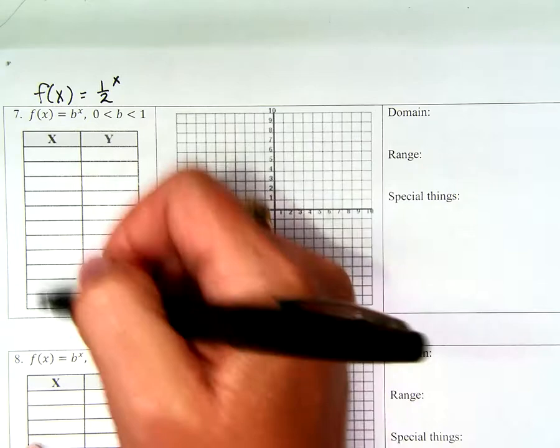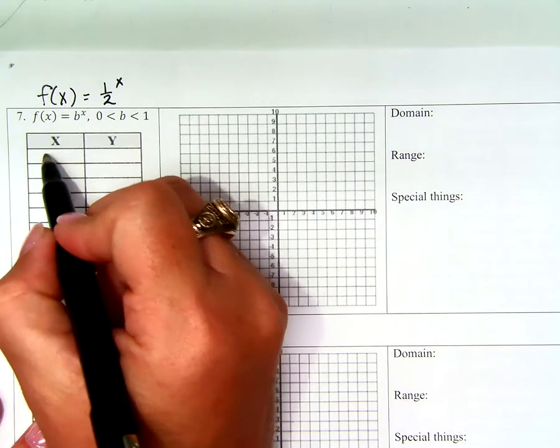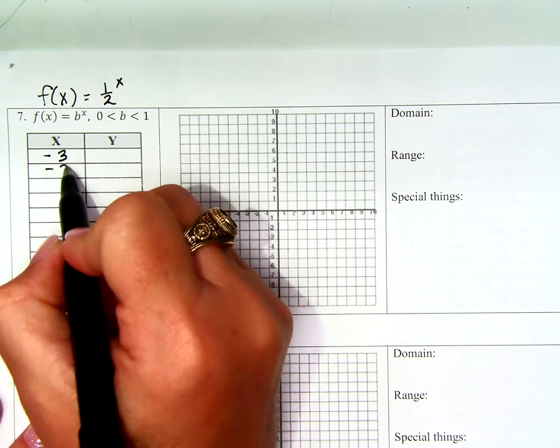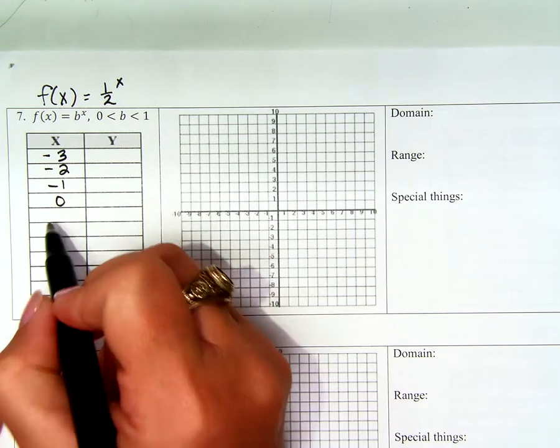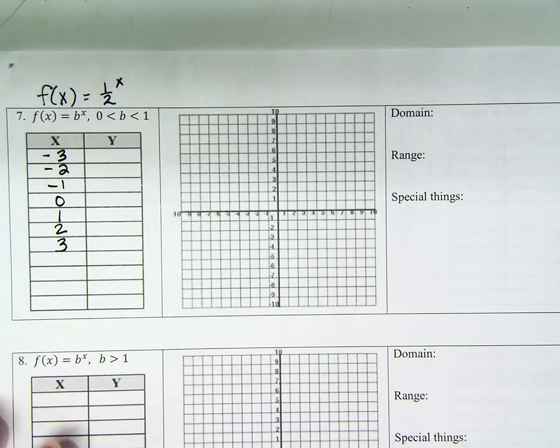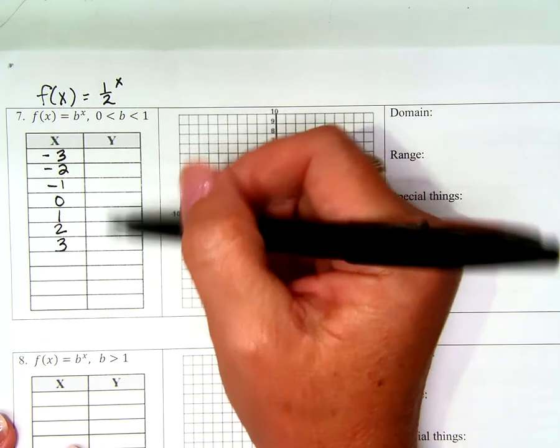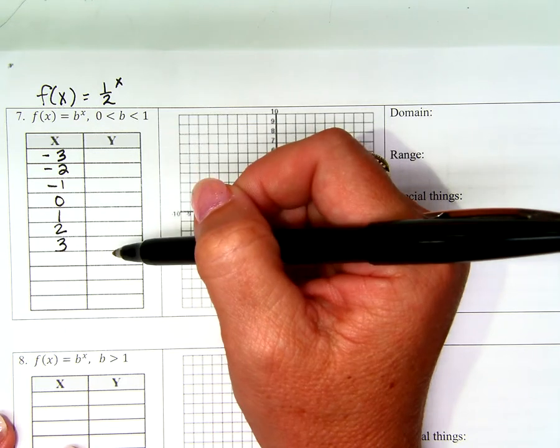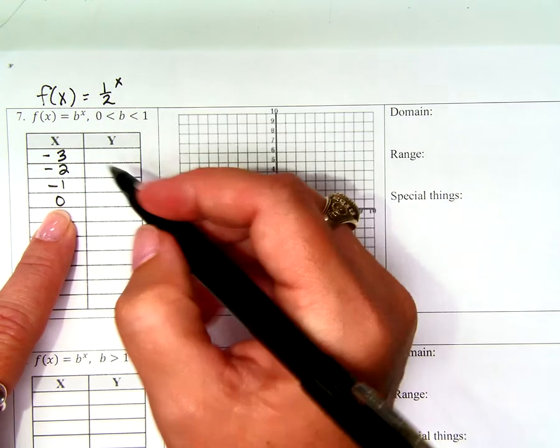So what x values did you choose? Negative 3, negative 2, negative 1, 0, 1, 2, 3. Those are good values to choose for this problem. What did you fill in? 0 is 1 because anything to the 0 power is 1, right?